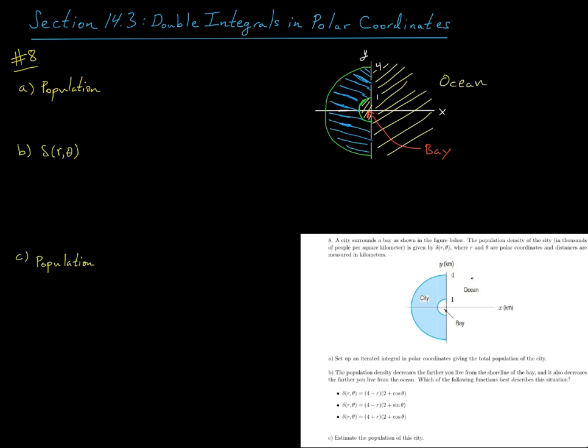The population density of the city in thousands of people per square kilometer is given by delta of r theta, where r and theta are polar coordinates, and distances are measured in kilometers. So part A is asking us to set up an iterated integral in polar coordinates, giving the total population of the city.